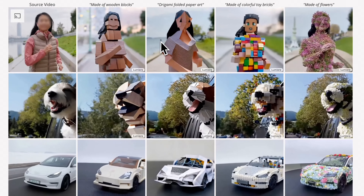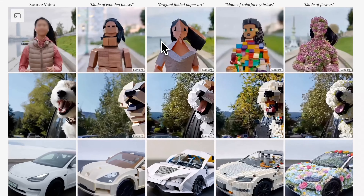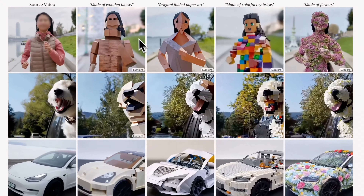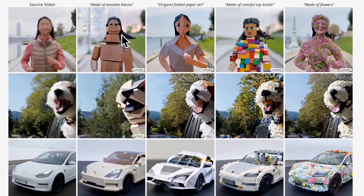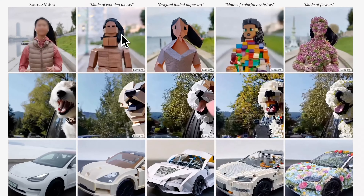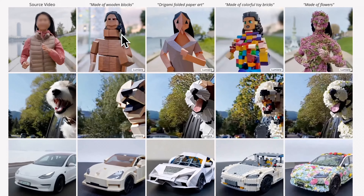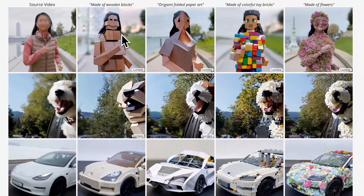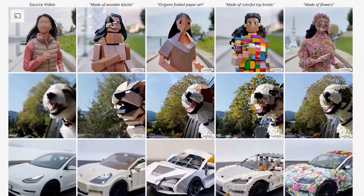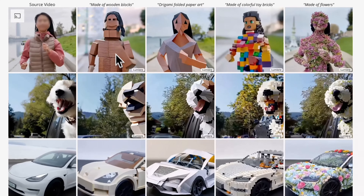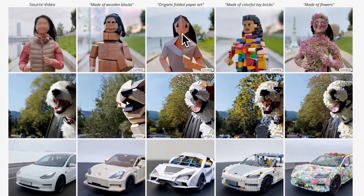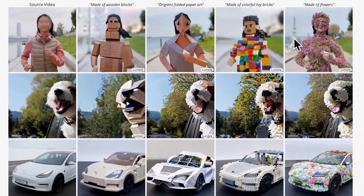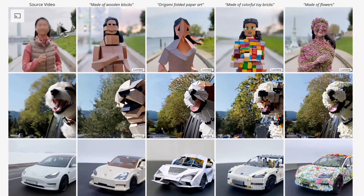Lumiere has the capability of reinterpreting existing videos and completely changing them. In the first column on the left we have the original video, but all subsequent columns to the right are dynamically changing the video into whatever image style it's given — making it into a set of wooden blocks, origami, toy colorful bricks, and one series made out of flowers.